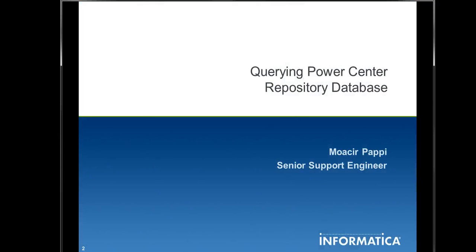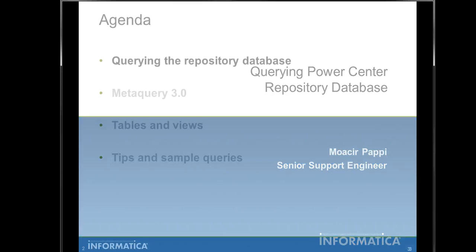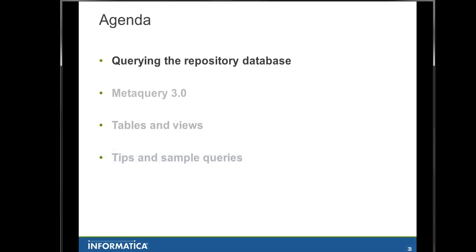My name is Moacir Papi and I would like to talk about querying the PowerCenter repository database. Querying the repository database can be really handy in some situations. Let's say that you have a repository with thousands of folders and you need to send to your developers a list of folders that are actually shared, so they can get some objects from there and use it on their mappings.